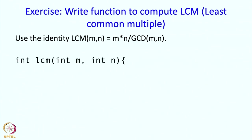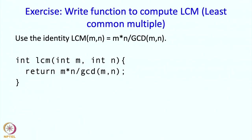Here is the code: we are going to write int LCM of M and N, it takes two parameters M and N, and we are going to return that expression — that is it. This assumes that GCD is already defined, and it should be defined before it is used, so the GCD definition should come above LCM.